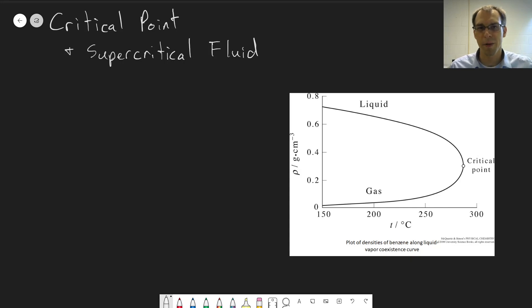The last thing we're going to talk about with phase diagrams is this critical point. This is at the end of the liquid-gas coexistence curve. So we have our liquid and gas, and this is the boiling transition between them.